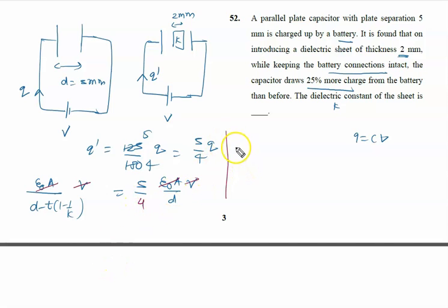Cross product. We will write 5 into D minus T times (1 minus 1 by K) equal to 4 into D. So open the bracket. 5D minus 5T times (1 minus 1 by K) equal to 4D.